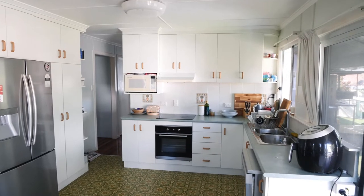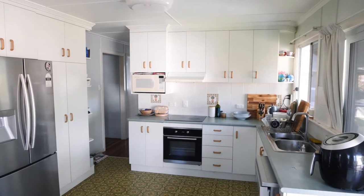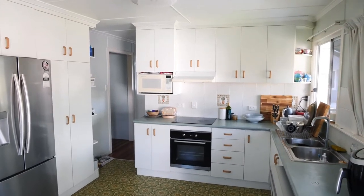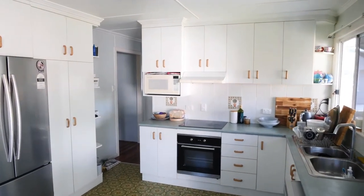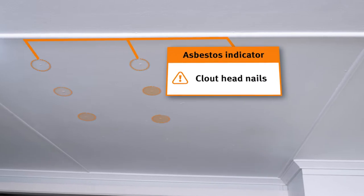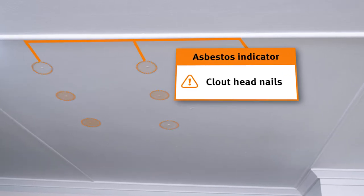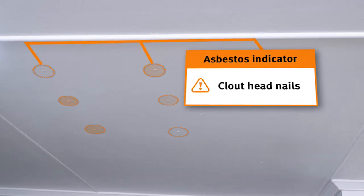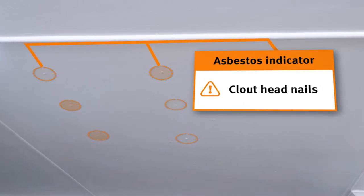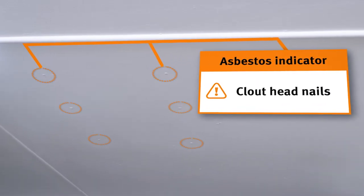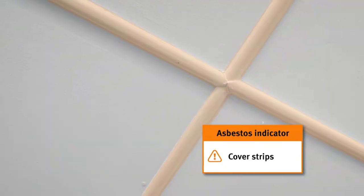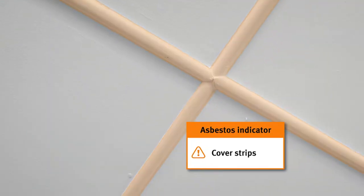Looking over towards the wall, I can see some protruding nail heads and also V-joint. We've come into the kitchen area now and I've noticed that in the ceiling here, we've also got an asbestos-containing material or fibro product. You can see the protruding nails and also the cover strips, a D-mold.